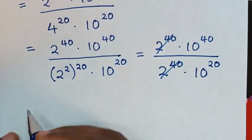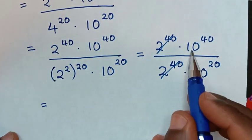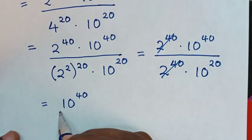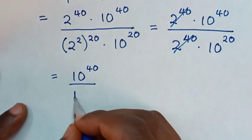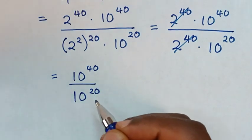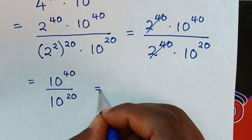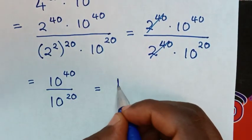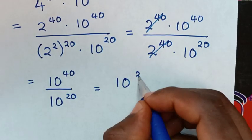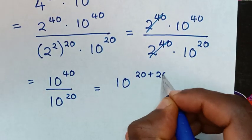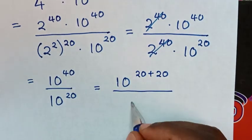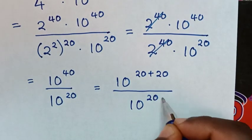Then it will be equal to 10 power of 40 over 10 power of 20. And 10 power of 40 is the same as 10 power of 20 plus 20, over 10 power of 20.